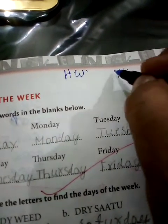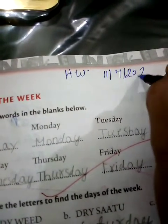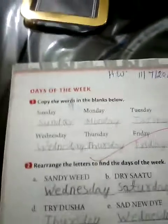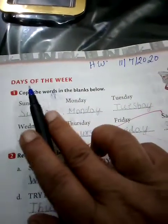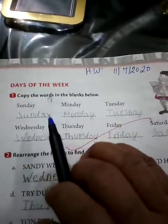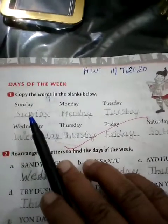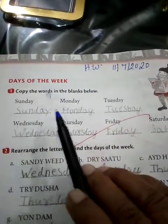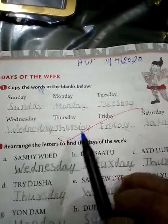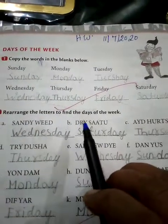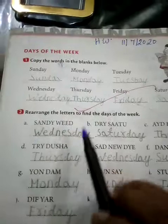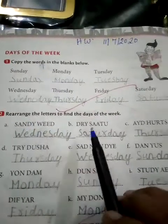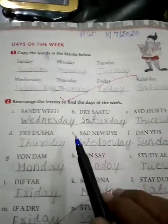Seven, seven — 2020. Days of the week: isse mein Sunday, Monday, Tuesday — jo words hain unko likhna hai. First you practice. Isse ko dekh ke aap ko practice karna hai: Sunday, Monday, Tuesday, Wednesday, Thursday, Friday and Saturday. Then after, rearrange the letters to find the days of the week. Isse jo words ko hain, isse ko re-arrange karke aap ko likhna hai.